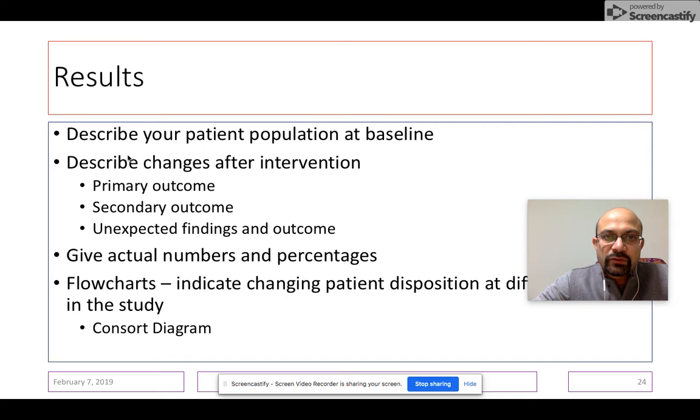So in the first portion of the results, you talk about the baseline population and the secondary outcome and then also describe if you found any unexpected findings or changes in the population after your intervention.